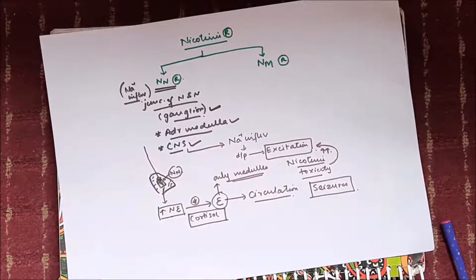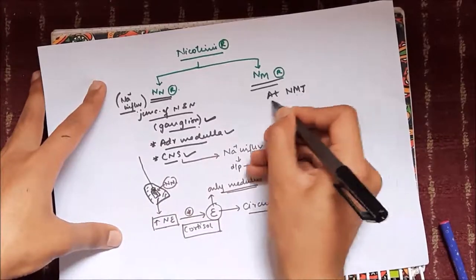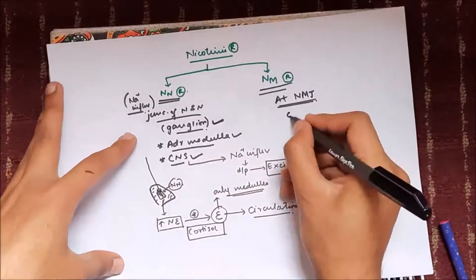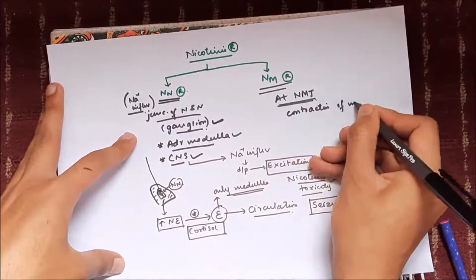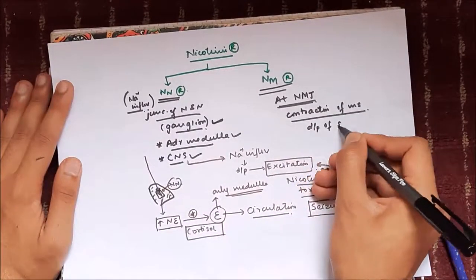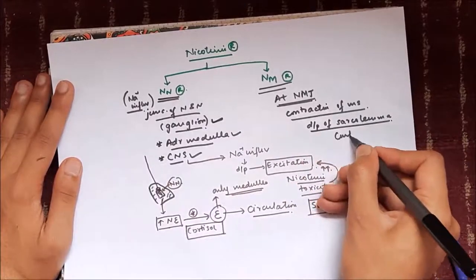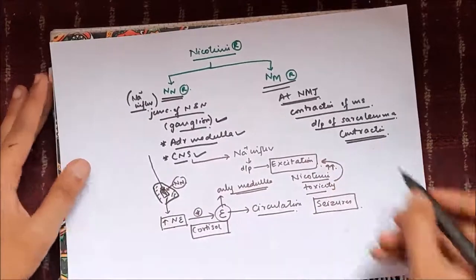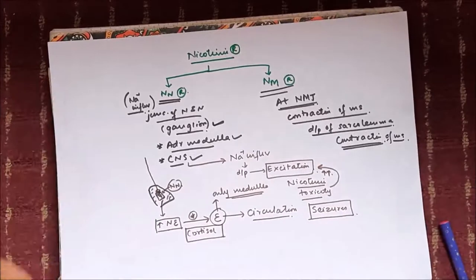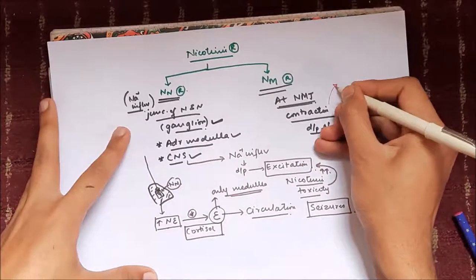NM type nicotinic receptors are present at the neuromuscular junction — the junction of nerve and muscle — and their function is to cause contraction of the muscle. They cause depolarization of the sarcolemma, which eventually causes contraction through excitation-contraction coupling.